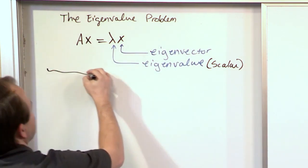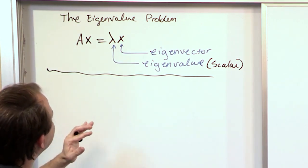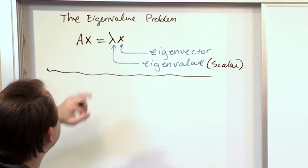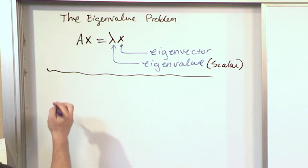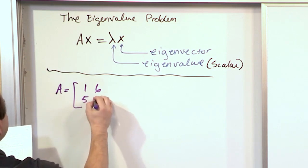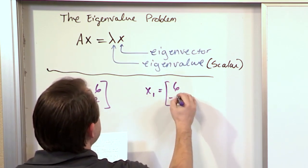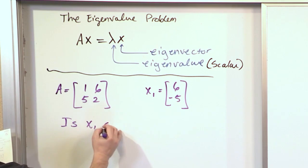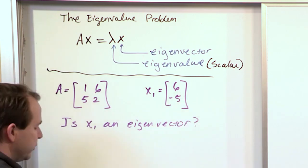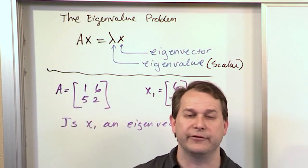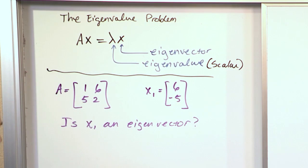Now that you have the general idea of what the eigenvalue problem is, we're going to figure out how to calculate eigenvalues and eigenvectors. But before we get to that, we're going to do a simpler problem. I'm going to give you a matrix A — in this case 1, 6, 5, 2 — and a vector x1: 6, negative 5. And I'm going to ask you: is x1 an eigenvector?